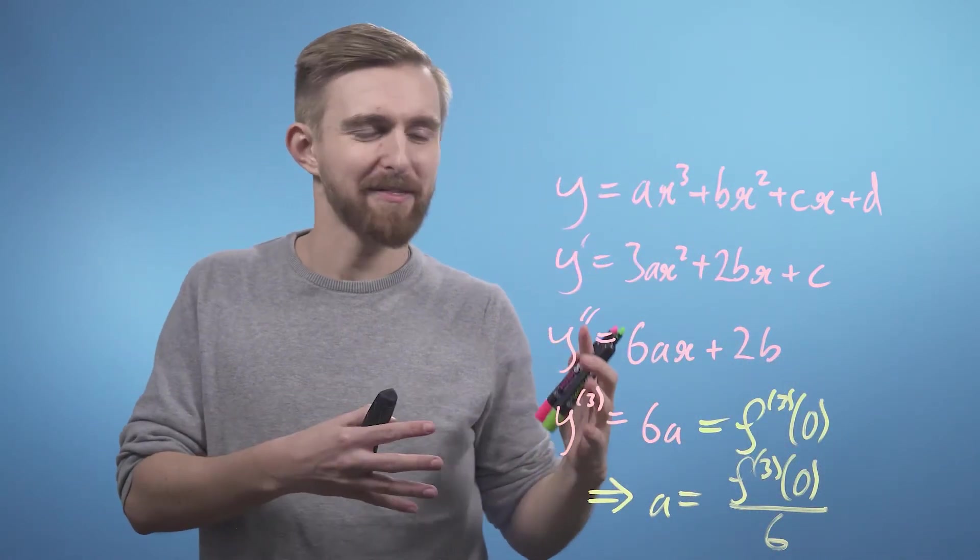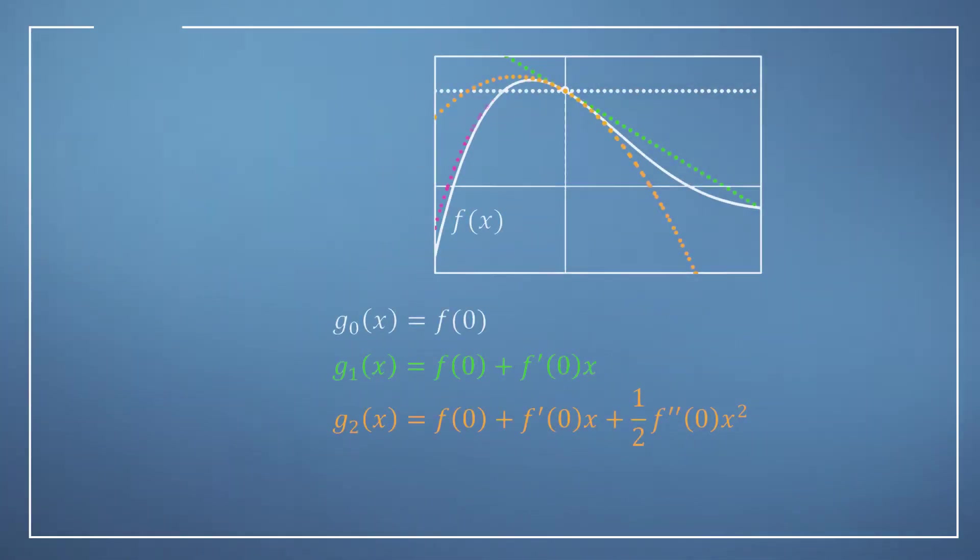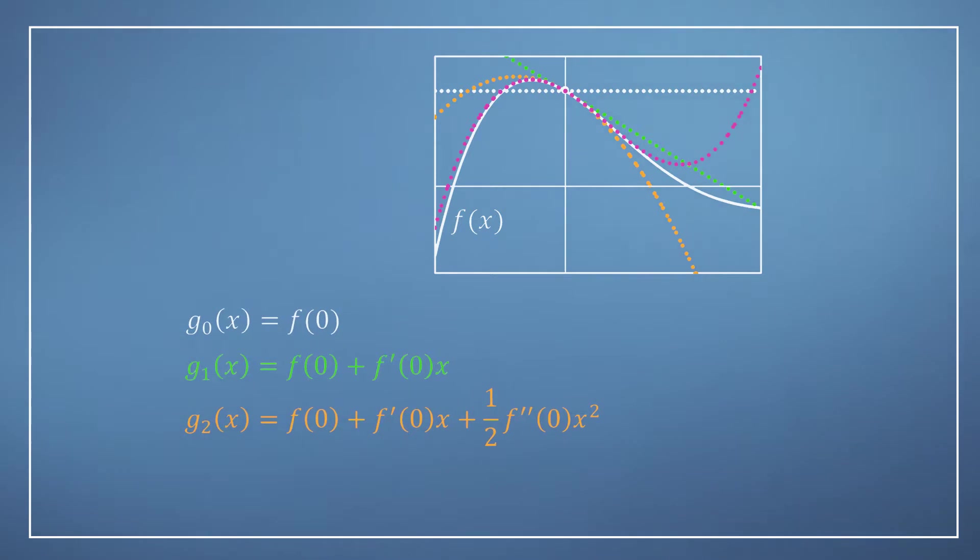Finally, we can add this third order approximation to our graph and write out its expression. You can now see that not only has the approximation improved significantly, but also that we can add higher order terms piecewise, and in each case the lower order terms remain the same.